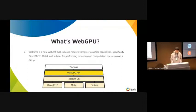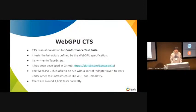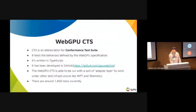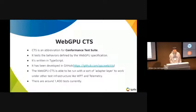The Chrome team aims to release WebGPU around the beginning of next year with good conformance test coverage. CTS is an abbreviation for conformance test suite. It has the behavior defined by the WebGPU specification, is written in TypeScript, and the WebGPU CTS has been developed on GitHub. The WebGPU CTS can be run with an adapter layer to work on other test infrastructure like Web Platform Tests and Telemetry.